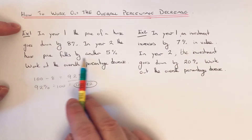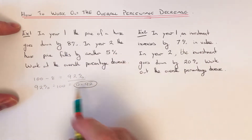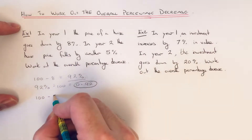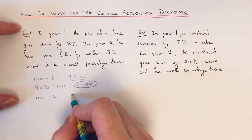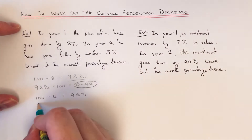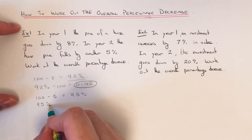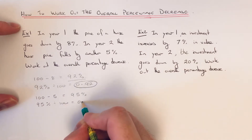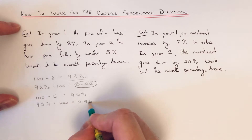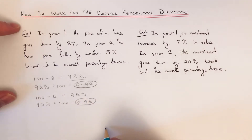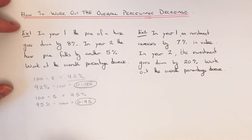Now do the same for year two. The house price falls by another five percent, so take five off a hundred, which is 95 percent. Divide by a hundred and that gives us 0.95. That is our decimal multiplier for year two.